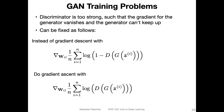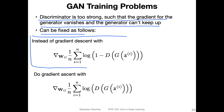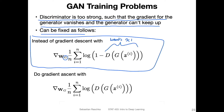Let's focus on the problem of the discriminator being too strong, such that the gradient for the generator vanishes and the generator can't keep up — which can be mitigated as follows. Here is the original GAN formulation from the paper — the update for the generator, the gradient of the loss with respect to the generator weights. The generator wants the discriminator to output something close to one for generated images.